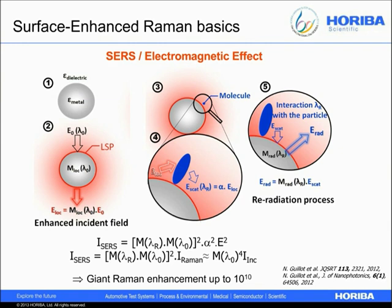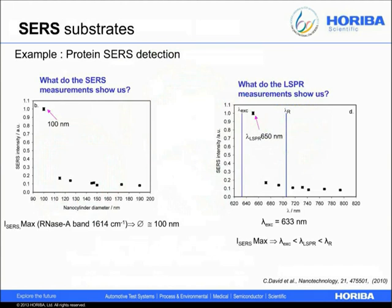In the next example, we will see the relation between the enhancement and the SERS intensity in the presence of a molecule. This example concerns the SERS detection of a protein called fibronectin A. The SERS substrates used are different nanocylinder patterns. Each pattern contains nanocylinders with different diameters, from 100 nanometers to 180 nanometers. A drop of the protein solution is absorbed on the substrate. Two types of measurements were performed: the SERS measurements, where only one Raman band of the protein was monitored, and the LSPR measurements, where the extinction spectra were measured for each pattern. The excitation wavelength was 633 nanometers.